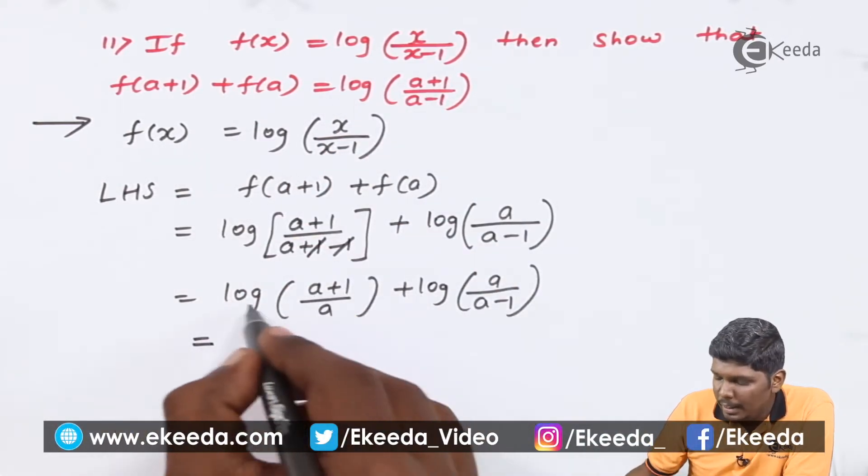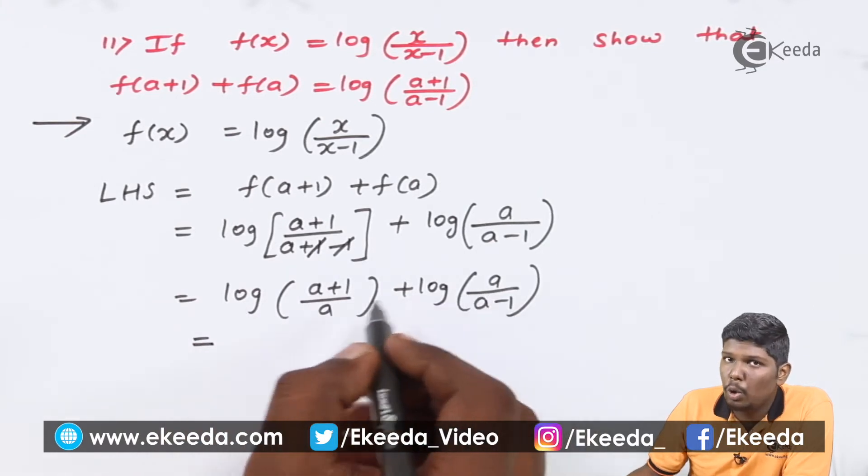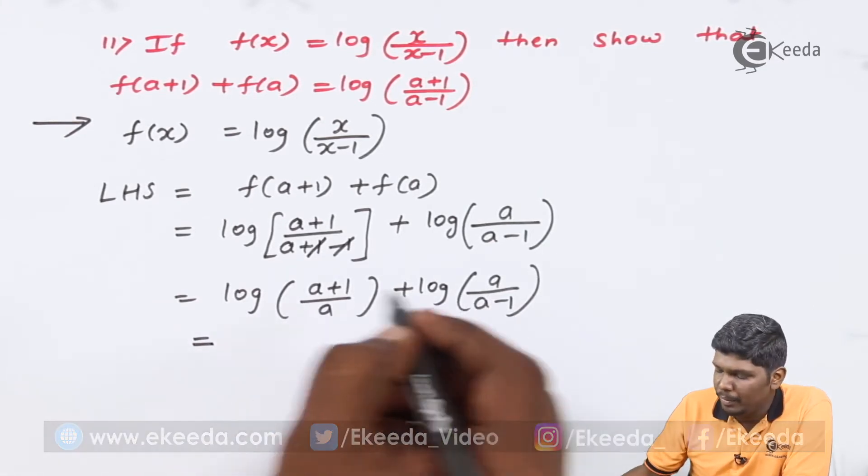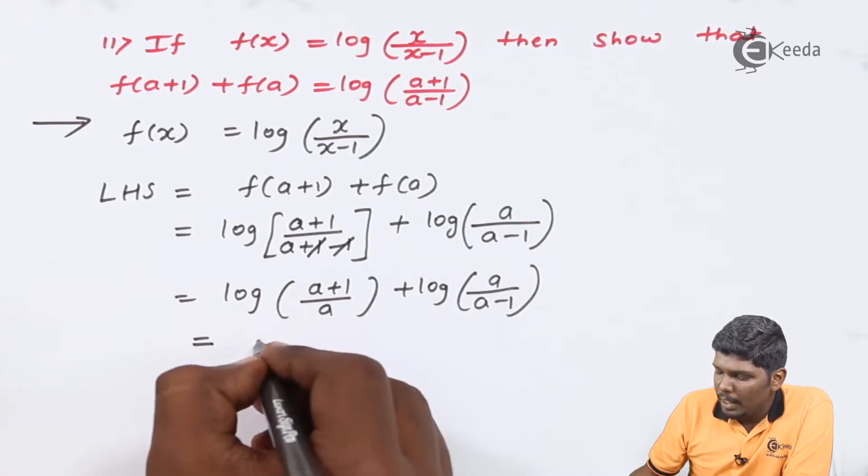So, we will use that property, log a + log b, also called the product rule of logarithm. Log a + log b is log ab.